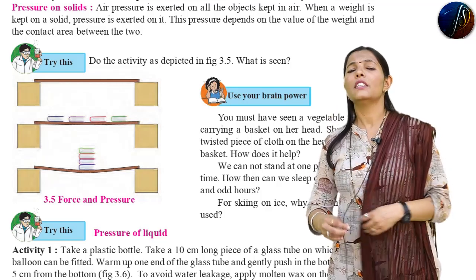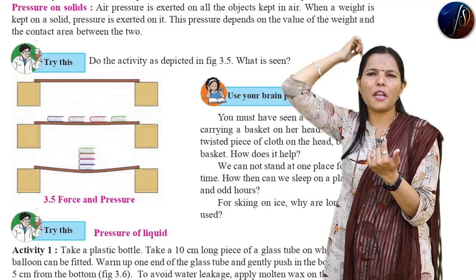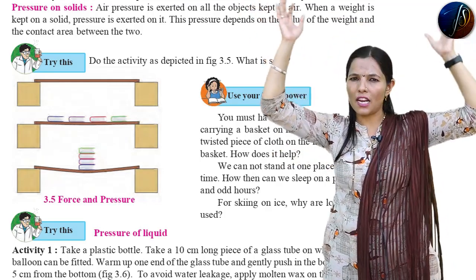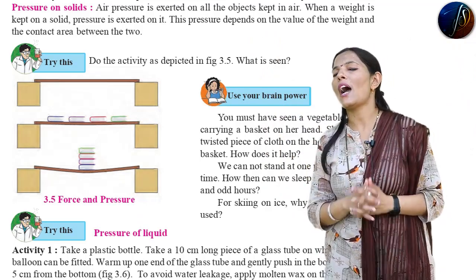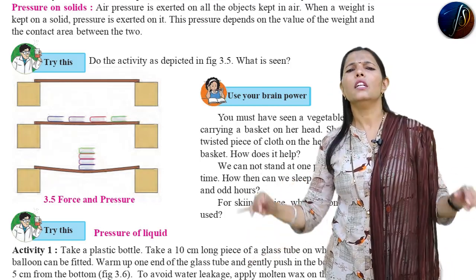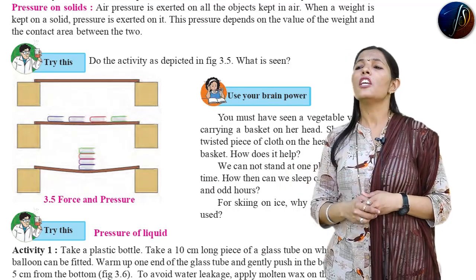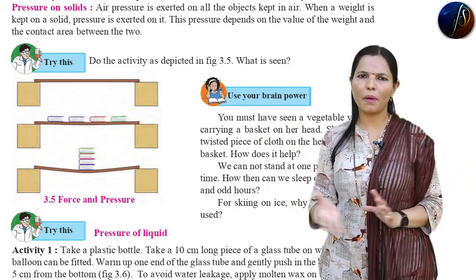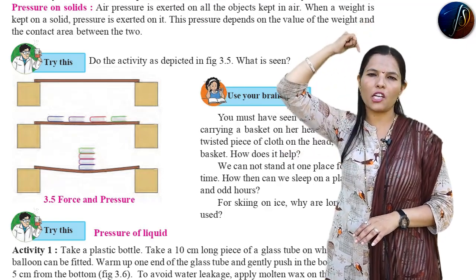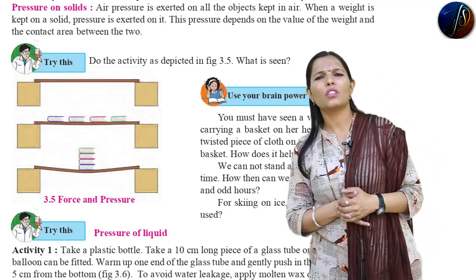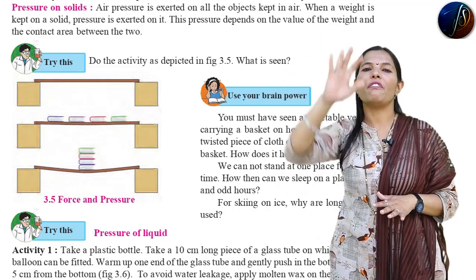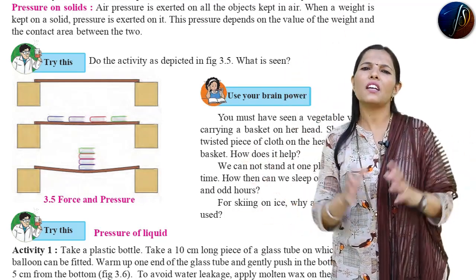What do you think is the reason? This is a twisted piece of cloth. In Marathi, we twist a piece of cloth and place it on the head. Because of this twisted piece of cloth, the weight of the basket is equally distributed, and the effect of the weight is less, so it is easily carried.